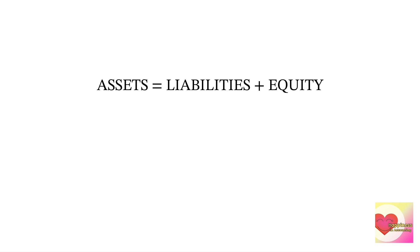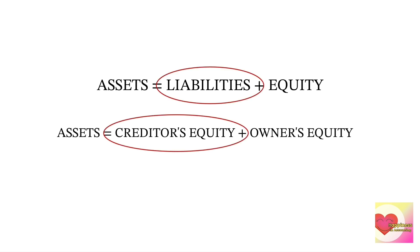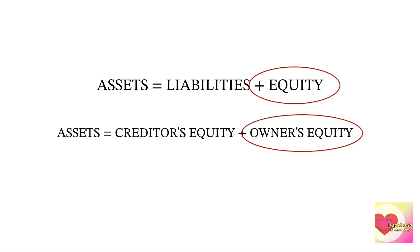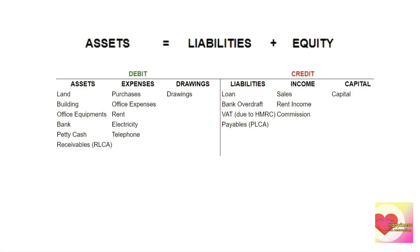Assets are everything that the company owns, but not all assets belong to the owner — a portion belongs to the creditors. In different terms: Assets = Creditors' Equity + Owner's Equity. Liabilities is the creditors' equity — the portion of assets belonging to creditors. Equity or owner's equity — sometimes called owner's capital or capital — is the portion of assets belonging to the owner.